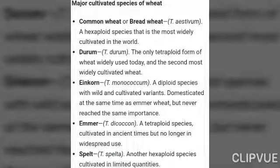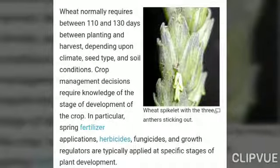Triticum durum is an important species — it is a tetraploid and the second most widely cultivated wheat. Triticum monococcum is a diploid species, both wild and cultivated forms. Triticum dicoccum is tetraploid, and Triticum spelta is another hexaploid species cultivated in limited quantities.